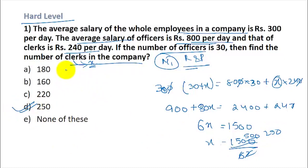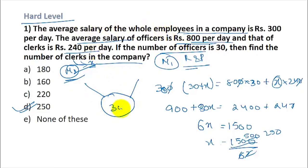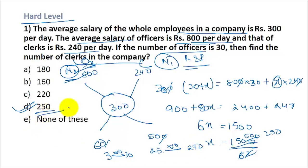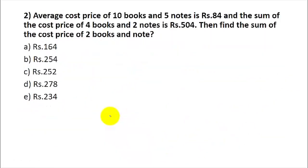Method 2 for Hard Q1 — Mixture and Alligation (recommended for speed): Overall average = 300. Officers' average = 800, clerks' average = 240. Differences: 800 − 300 = 500 and 300 − 240 = 60. Ratio of clerks to officers = 500:60 = 25:3. Officers = 30, so multiply ratio by 10: clerks = 25 × 10 = 250. This method gives the answer much faster.